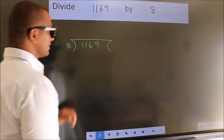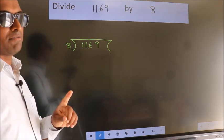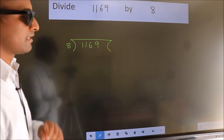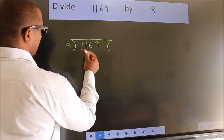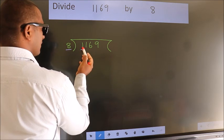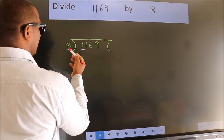This is step 1. We have 1 here and 8 here. 1 is smaller than 8, so we should take two numbers: 11.